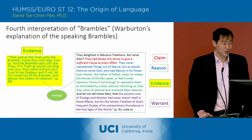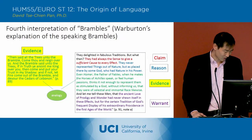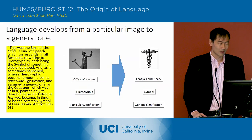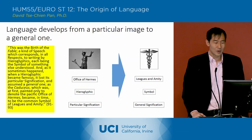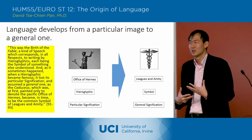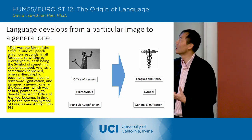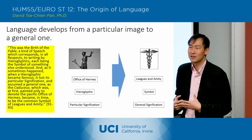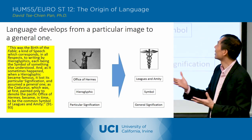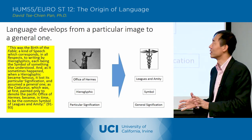Those are the four interpretations of the Brambles that we have so far. We haven't finished the first interpretation yet, but it's already giving us this sort of general rule, where he's got this idea that language develops from a particular image to a general one.